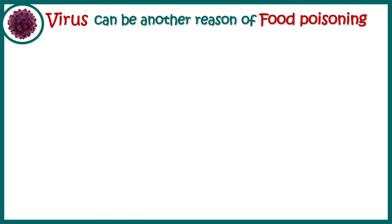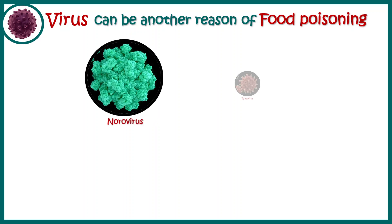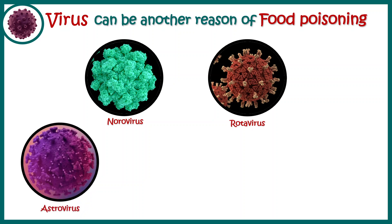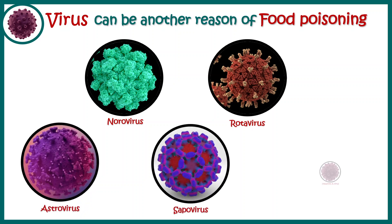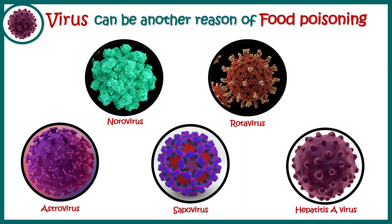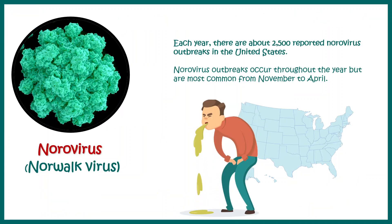Many viruses are reported to cause food poisoning, such as norovirus, rotavirus, astrovirus, sapovirus, and hepatitis A virus. Among these, the most common is norovirus — in the USA alone there are 2,500 reported norovirus outbreak cases, and there is a particular season when norovirus-mediated food poisoning is especially common.